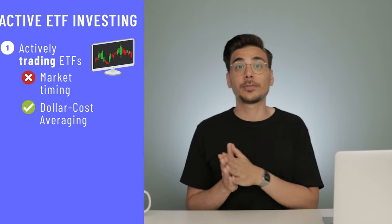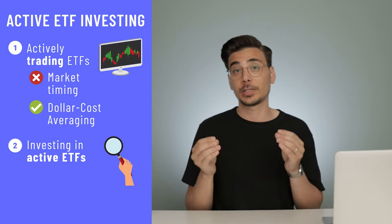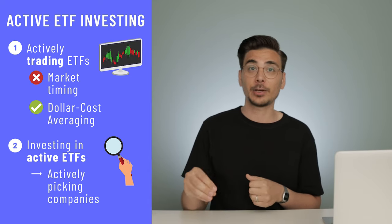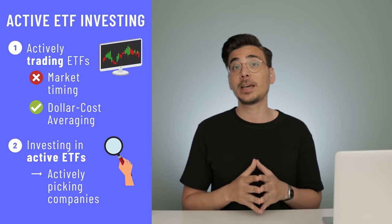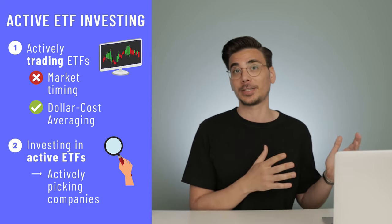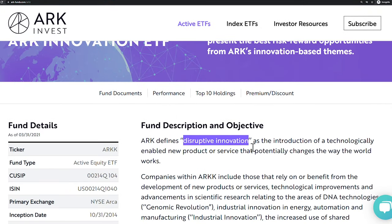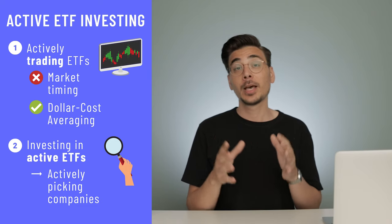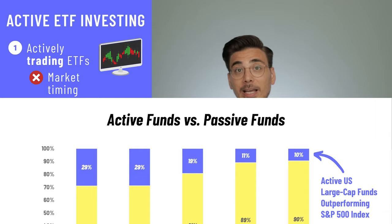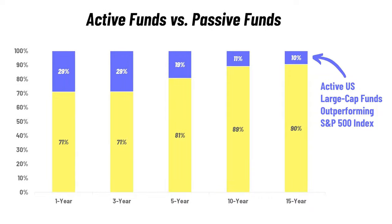The second way you can move towards active investing is to invest in actively managed ETFs. The name ETF is misleading here because they don't passively track an index — they actively pick companies, similar to an actively managed mutual fund. The label 'ETF' is often used by those active funds to participate in the massive ETF boom of recent years. One example is the ARK Innovation ETF, which invests in disruptive innovation. Actively picking companies can work for some fund managers, but for the majority it doesn't — only 10% of actively managed funds beat the S&P 500 over a 15-year timeframe.